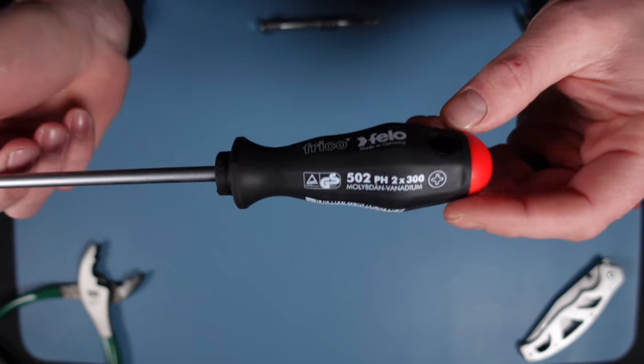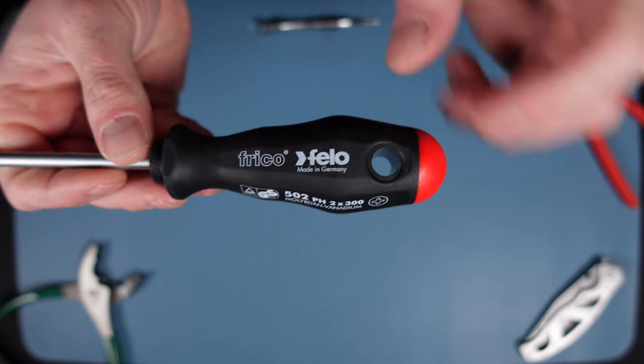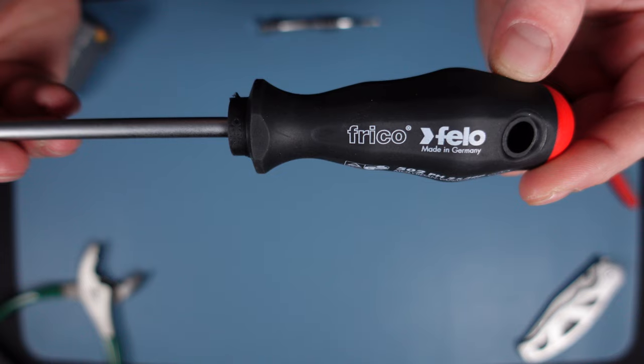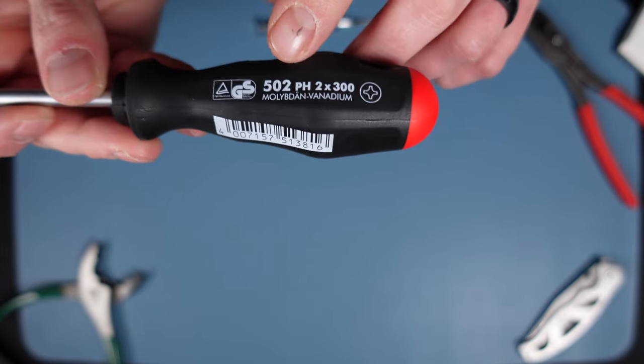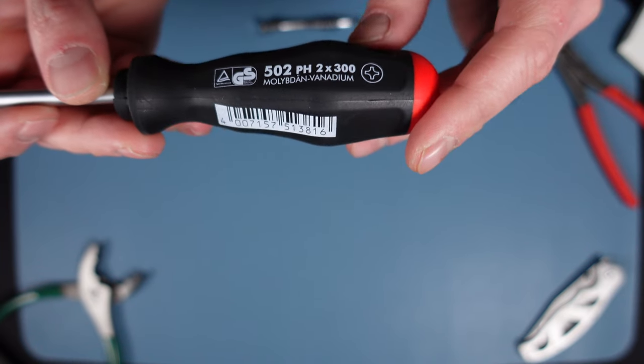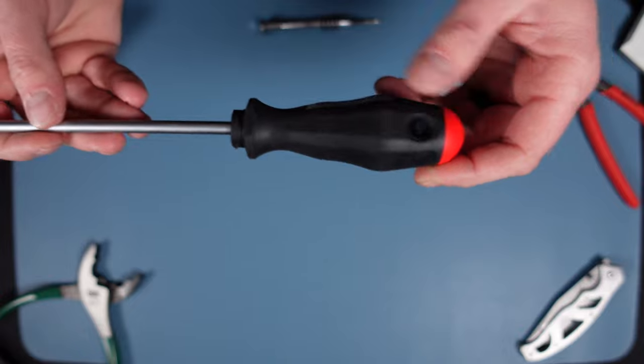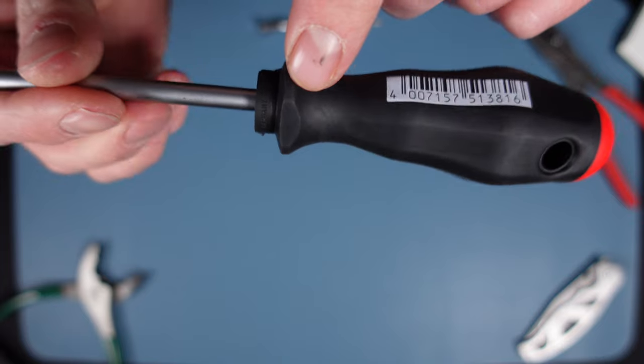So just a close-up look of the handle. I don't know if this is Filo or Frico, I have no idea how that is pronounced. Filo made in Germany at the 502 Phillips head number two at 300 instead of 100, and that is it.